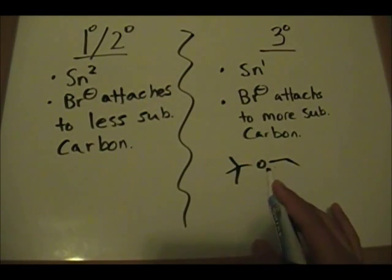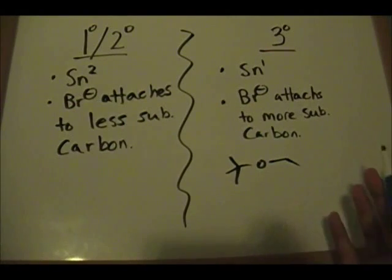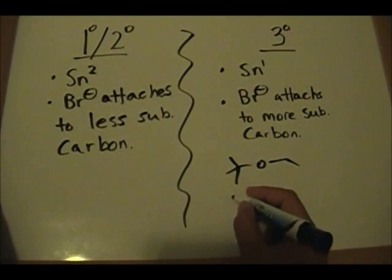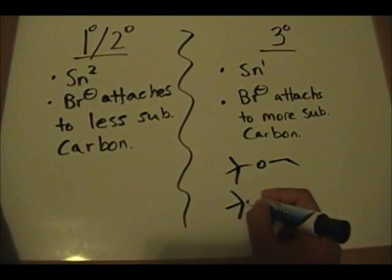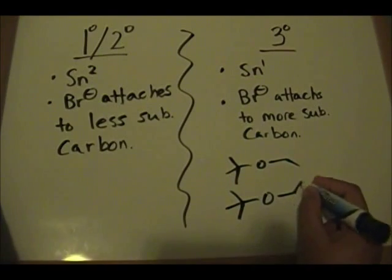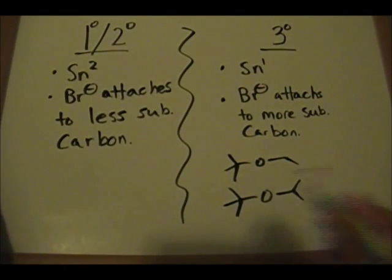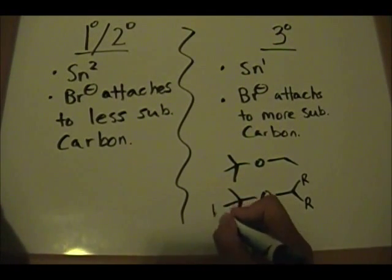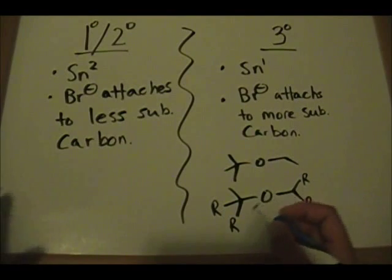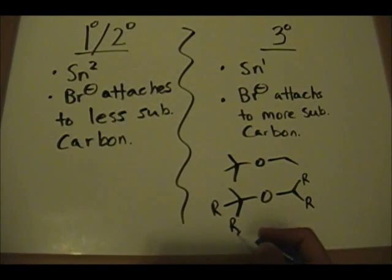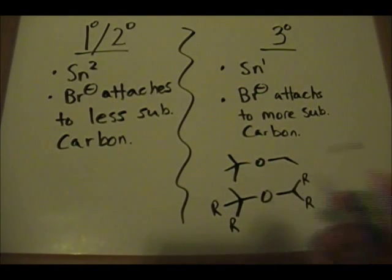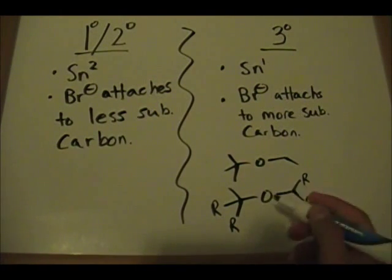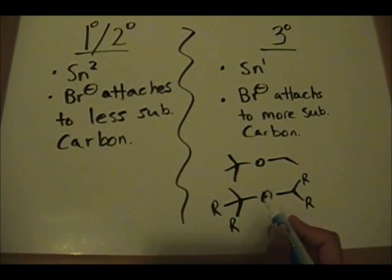Another type you'll see is if you have a secondary versus a tertiary — this also falls into the tertiary category. The R groups on these carbons could be anything, any type of alkyl group. This is where a professor could confuse you by putting aromatic rings or other groups that are irrelevant to the reaction itself, which might throw you off. So just look at the carbon directly attached to the oxygen.